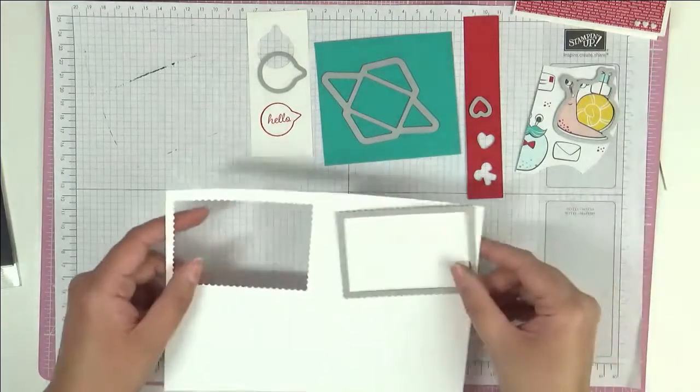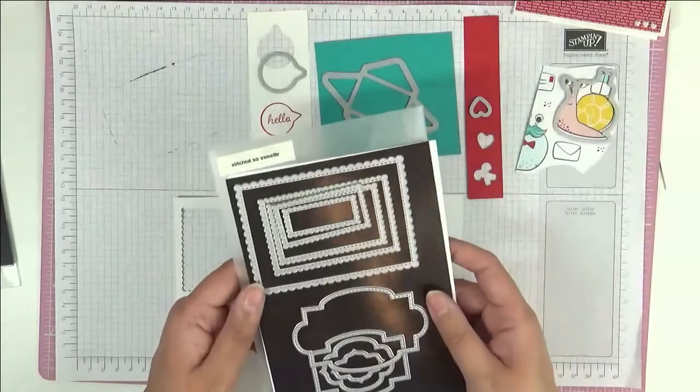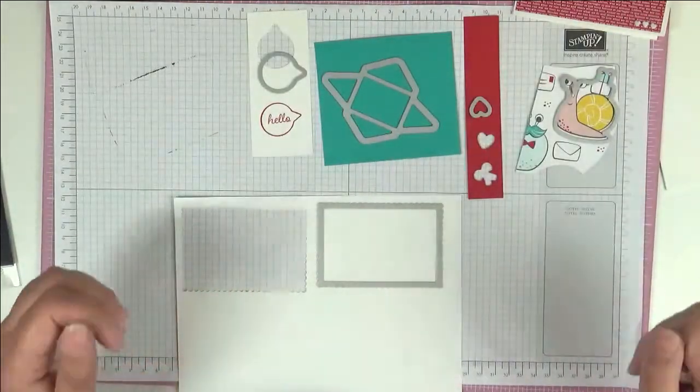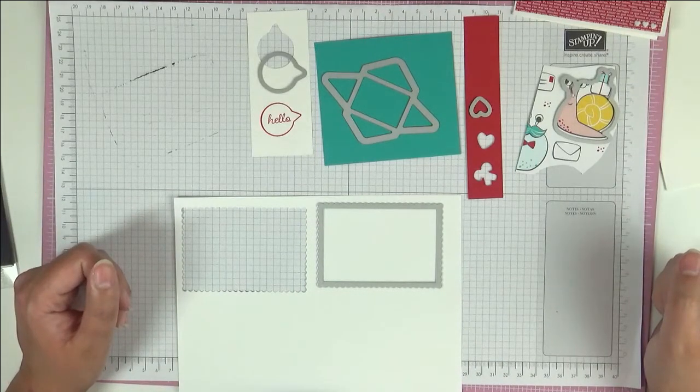And then I have a piece of basic white and we're going to cut it out with this frame here from the stitch so sweetly and this is the second largest frame. So I am going to put those all through the big shot or my die cutting machine rather and I'll come back to you.